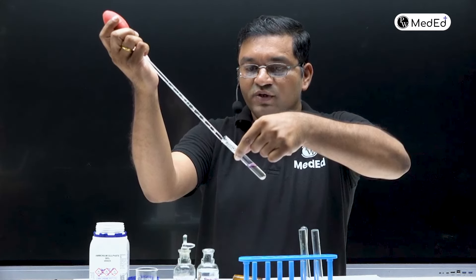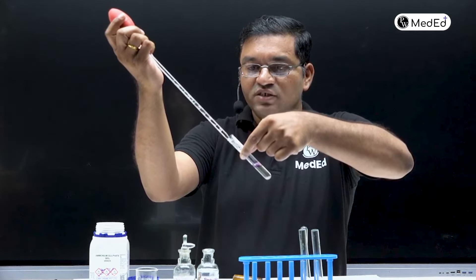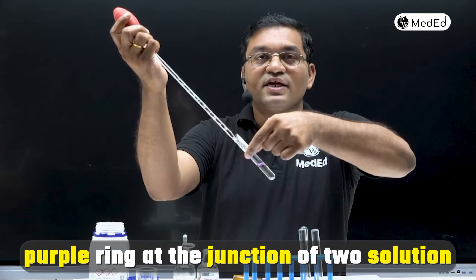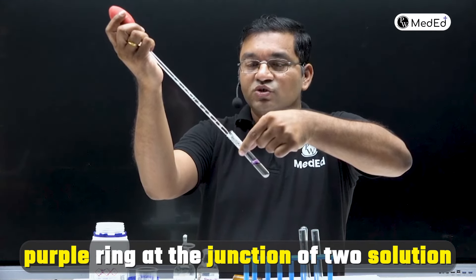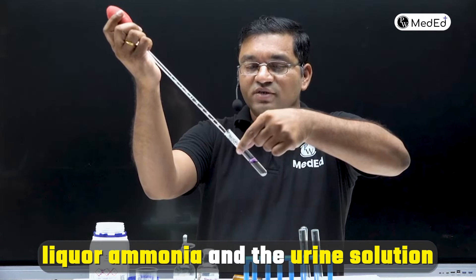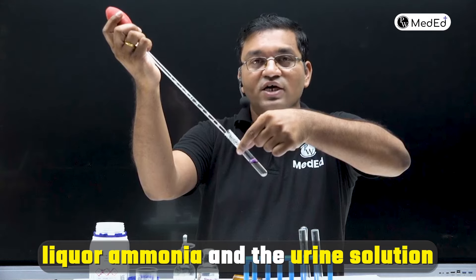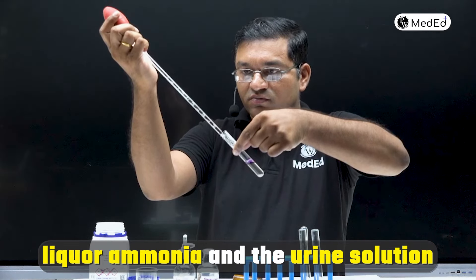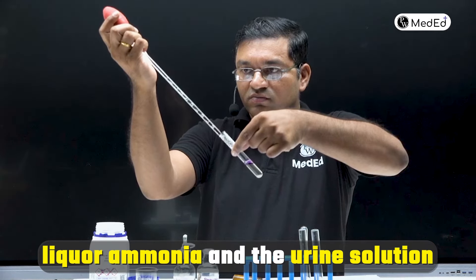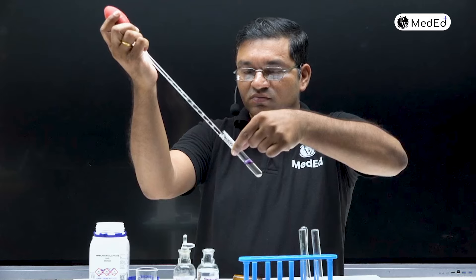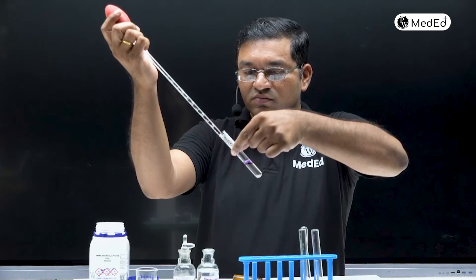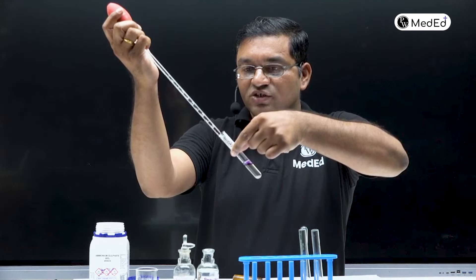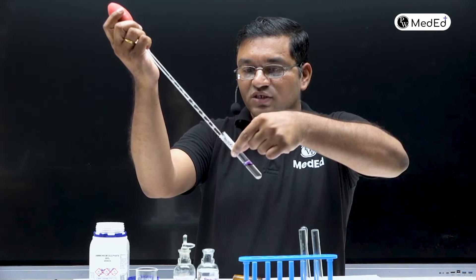Your observation should be a purple ring at the junction of the two solutions — that is, the liquor ammonia and the urine solution. Look for a deep purple ring at the junction of the two solutions.